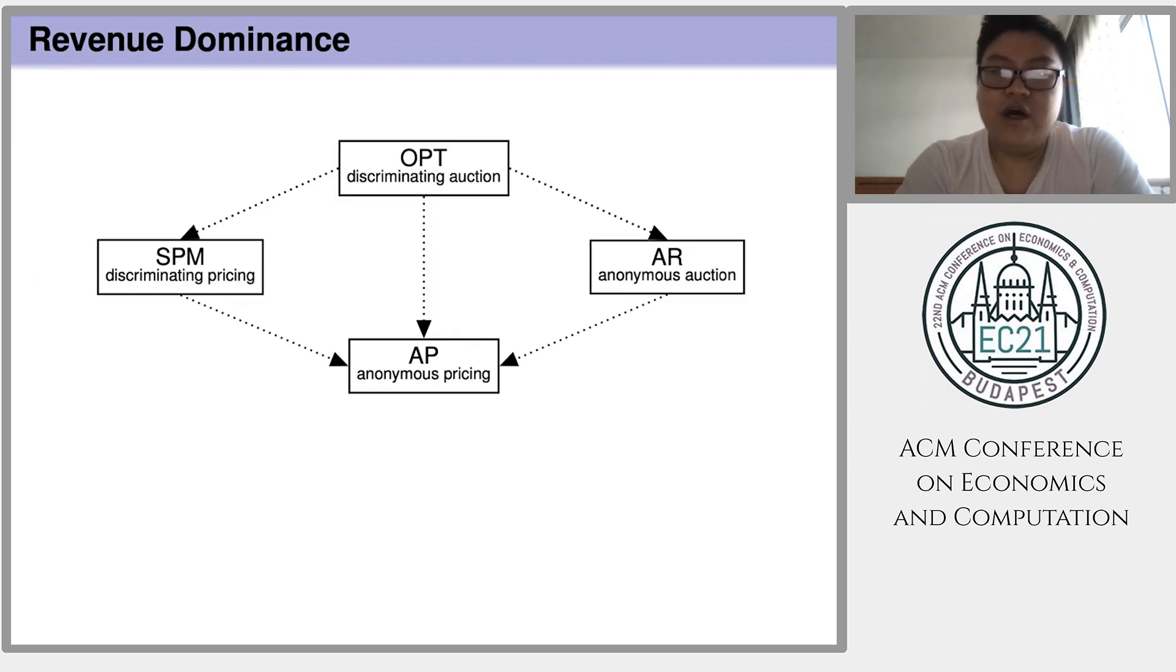From the description of those mechanisms, it's easy to imagine that Myerson Auction gives the highest revenue among these four mechanisms, and anonymous pricing gives the lowest revenue among those four mechanisms. Indeed, these four mechanisms together form this lattice structure.